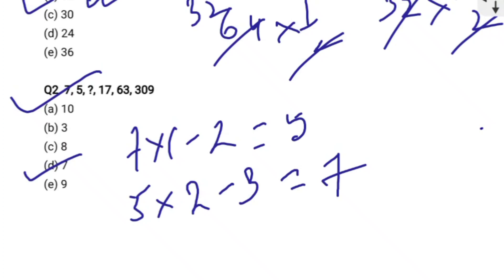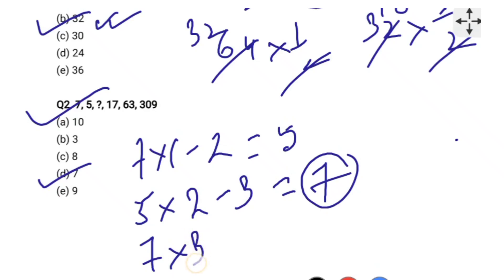Now we will verify whether 7 is correct or not. Then 7 into 3 minus 4, 7 times 3 is 21 minus 4 is 17. So the next term is 17, so it is verified. Option D is the correct term.